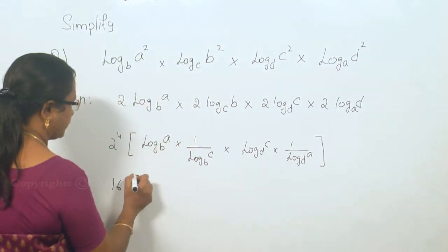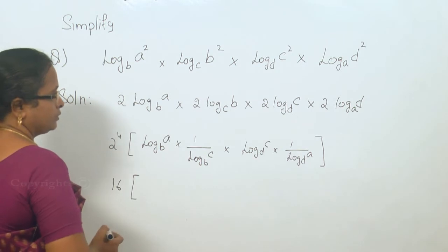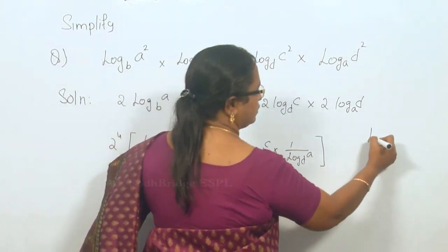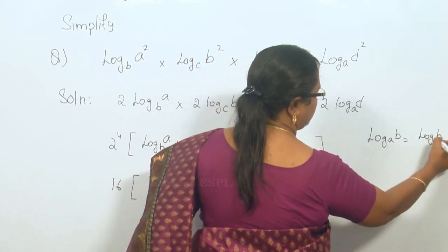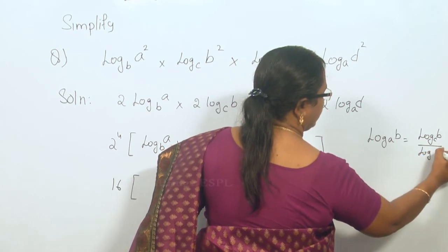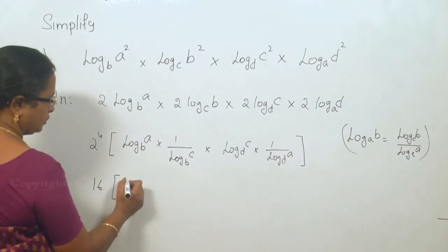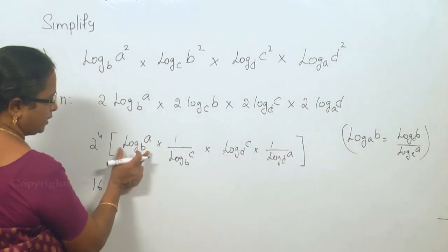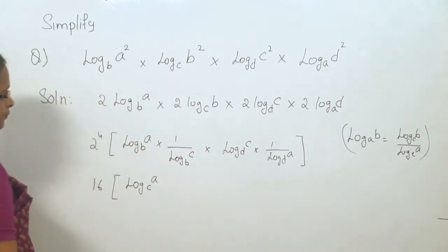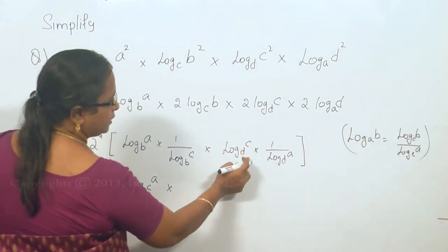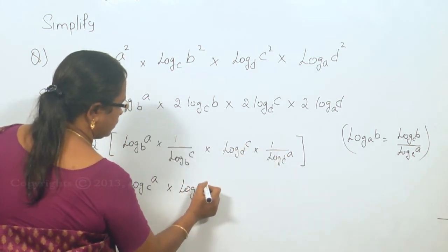So, this is 16 into — and here again you have the same base. Following the rule that log b to the base a can be written as log b to the base c divided by log a to the base c, this rule is applied here. The base is the same and we have log a and log c, so this can be written as log c. The d is common and can be taken out, and this can be written as log c to the base a.